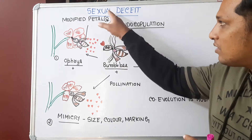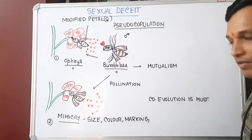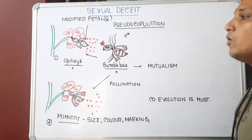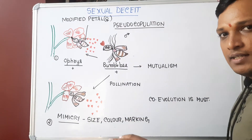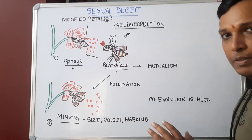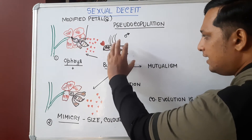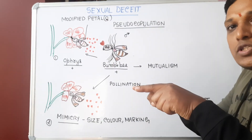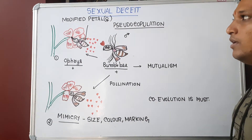Now, what is co-evolution? Suppose the petal slightly changes its markings or color — pollination will not occur. Similarly, if the male bee changes its color, pollination will be prevented. So how to overcome that problem? The female bee petal must also change as per the male bee's color pattern — together they must evolve. That is called co-evolution. Without co-evolution, this kind of pollination or mutualism is not possible.